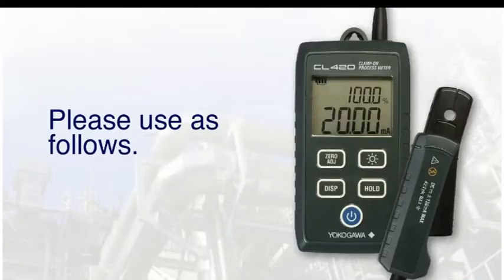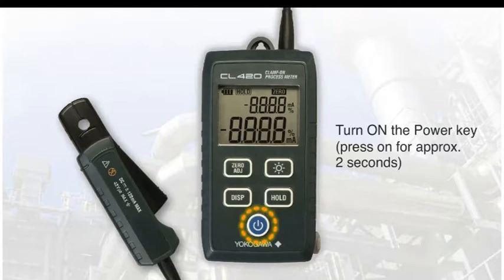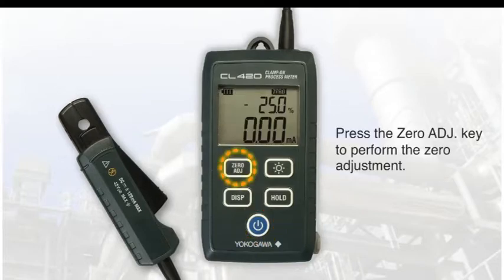Please watch this demonstration to see how easy the CL420 is to operate. First, press and hold the power key for 2 seconds. Then, open and close the clamp 2 to 3 times. Press the zero adjust key, perform the zero adjustment.